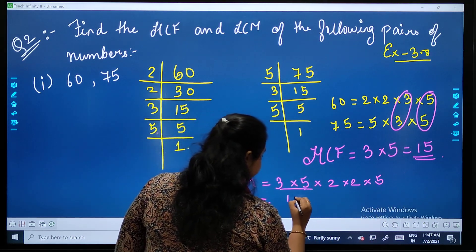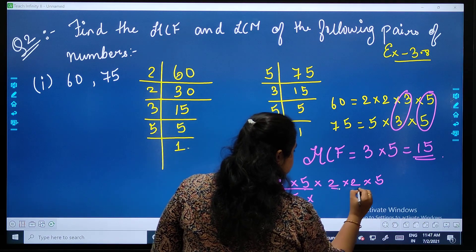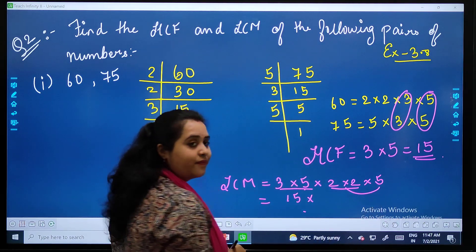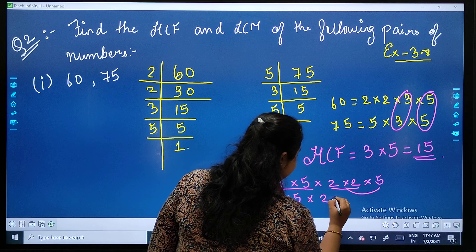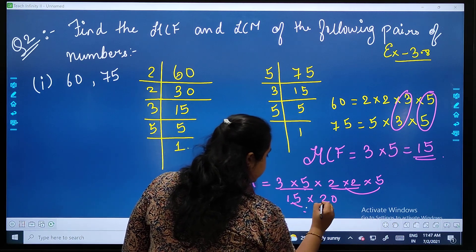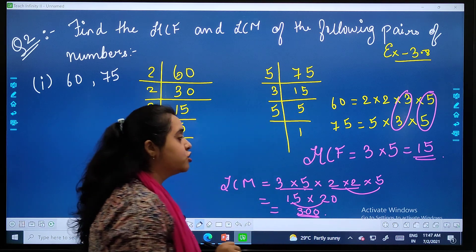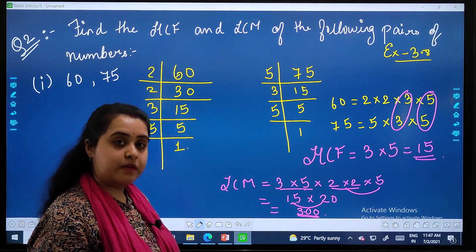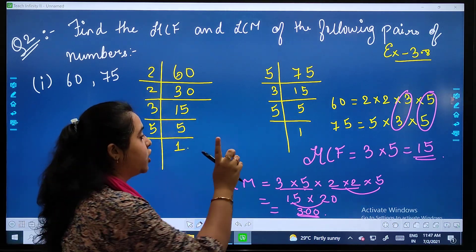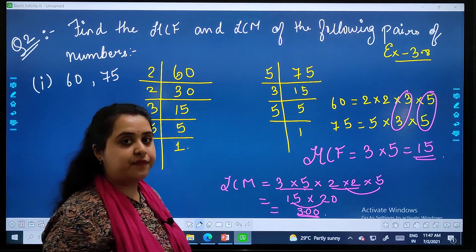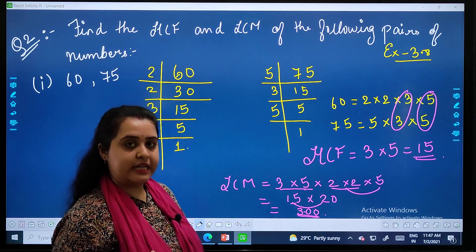3 fives are 15, 2 twos are 4, 4 fives are 20. 15 twos are 30 and the zero will be coming in the end. So your LCM is 300 and your HCF is 15. Done, easy.